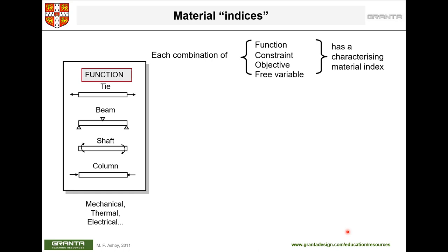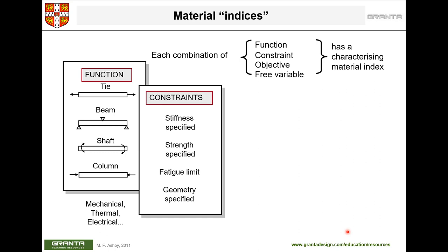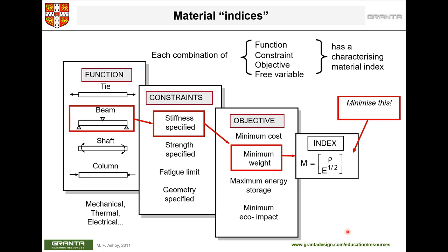Material indices depend on the type of loading — whether you have a beam, shaft, or column, the index will differ. CES software allows you to specify the geometry and loading condition, select stiffness as a constraint and weight as the objective, and it provides the appropriate material index to work with.